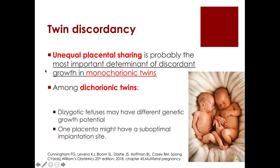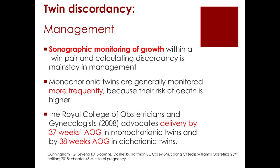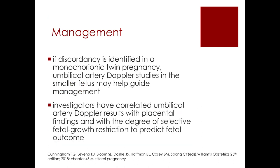Unequal placental sharing is probably the most important determinant of discordant growth among monochorionic twins. Among dichorionic twins, the reason may be different genetic growth potential or suboptimal placental implantation. Graphic monitoring of growth within a twin pair and calculating discordancy is the mainstay of management. Monochorionic twins are generally monitored more frequently because their risk of death is higher. The RCOG advocates delivery by 37 weeks AOG for monochorionic twins with discordancy and 38 weeks for dichorionic twins with discordancy.